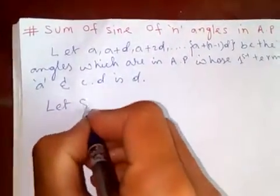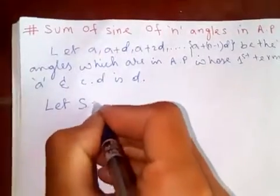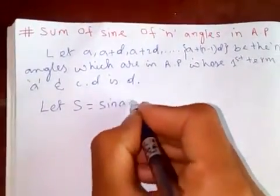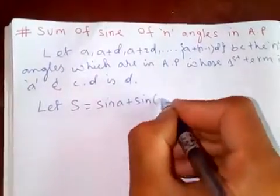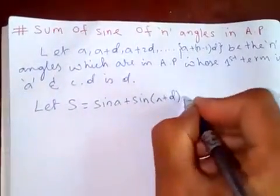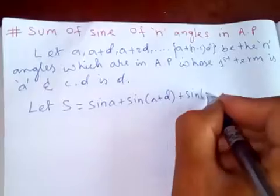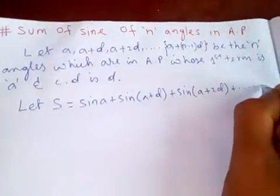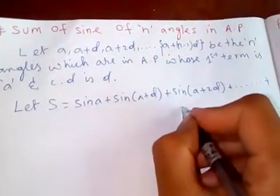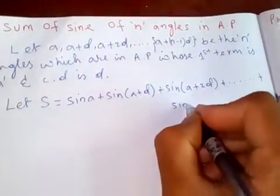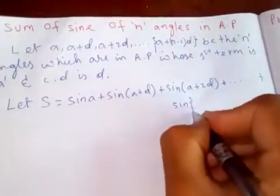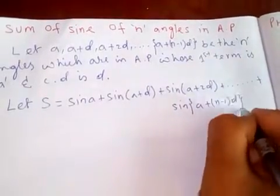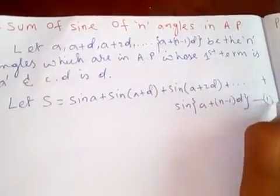Now let S be the sum we need to find. Since we need to find the sum of sines: S equals sin(A) plus sin(A plus D) plus sin(A plus 2D) plus and so on up to n terms, which is sin(A plus (n minus 1)D). Let's call this equation 1.